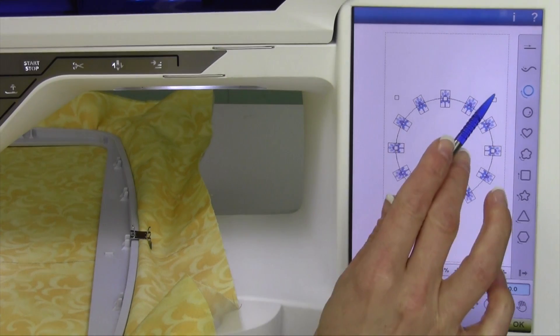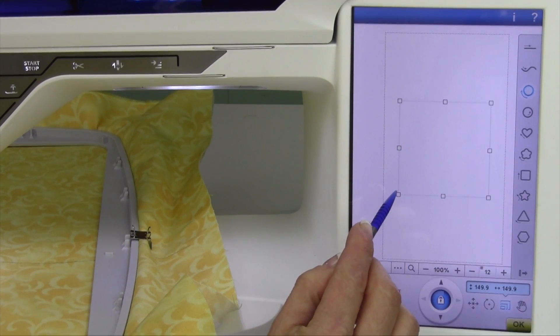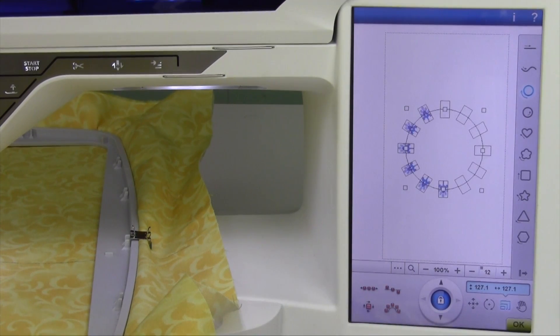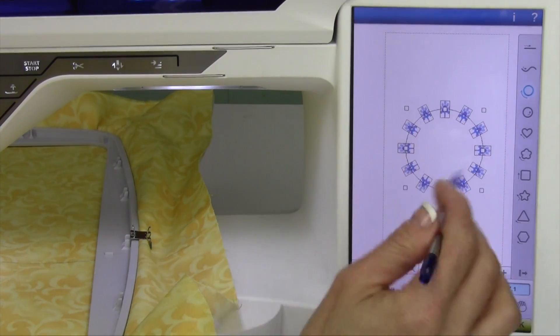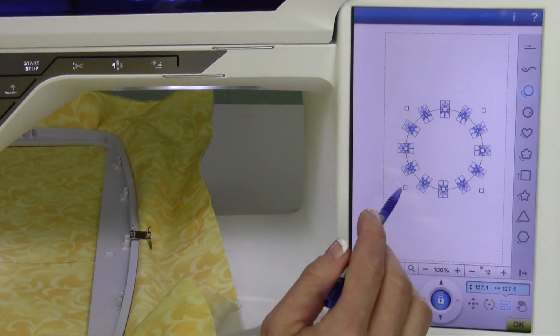Notice there's handles on the outside here. That means that we can drag, make it closer together so they almost come together and touch. This is a perfect place to put a little monogram in the middle once we are done playing around.